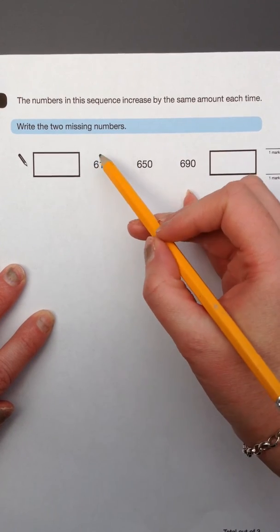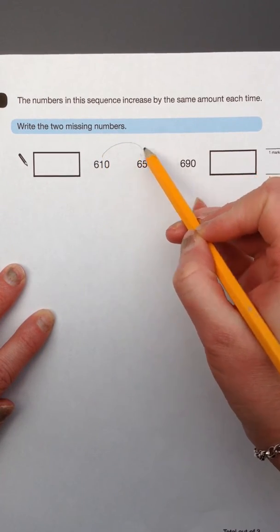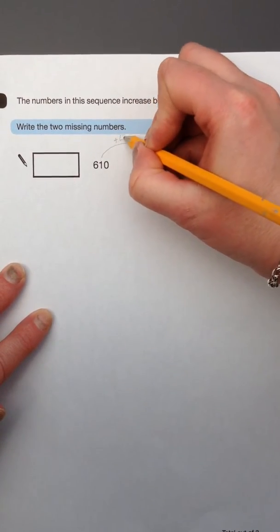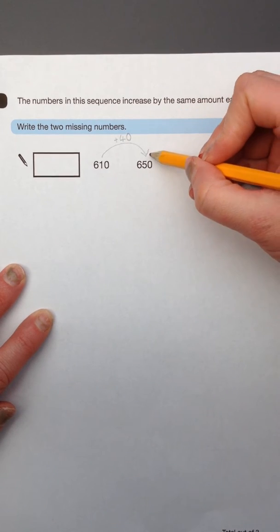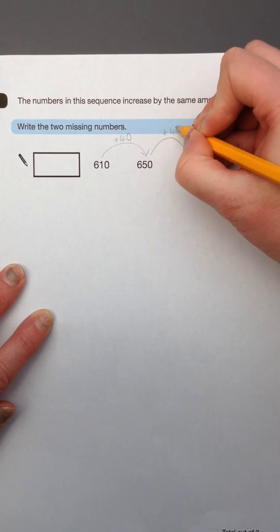So to get from 610 to 650, 40 has been added. To get from 650 to 690, 40 has been added.